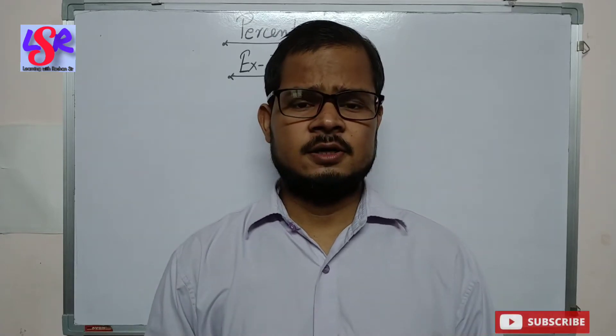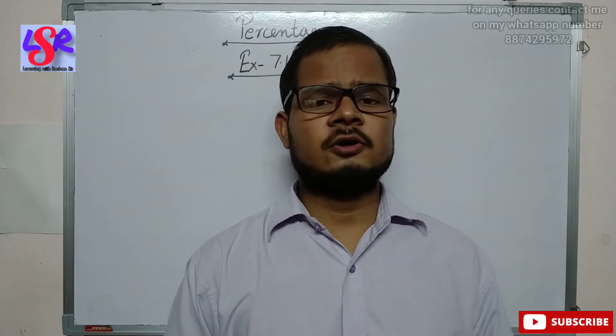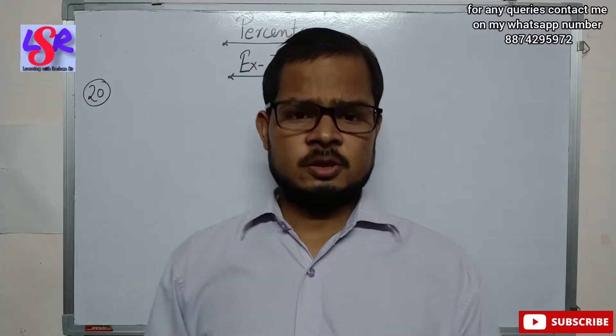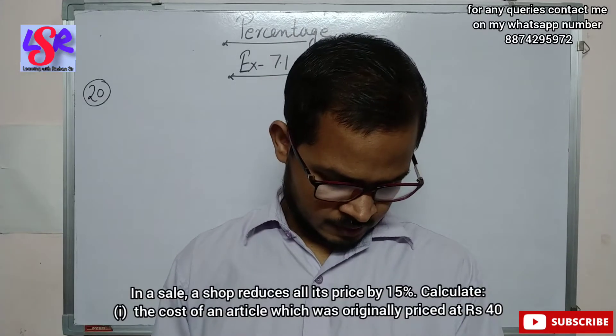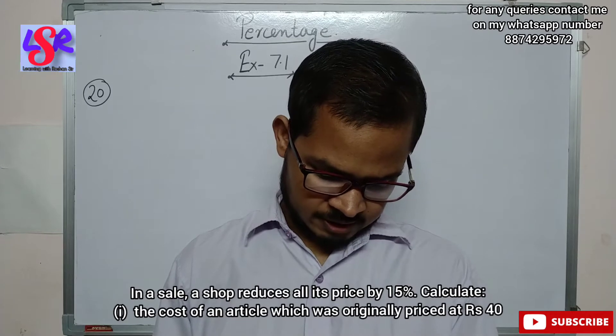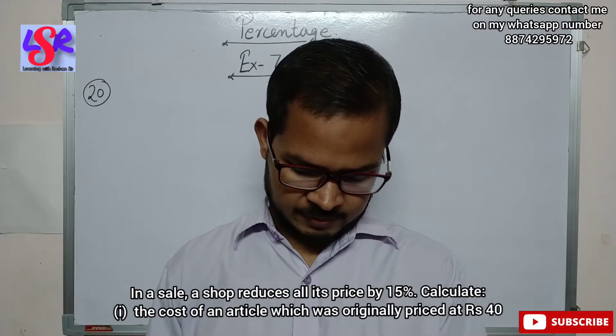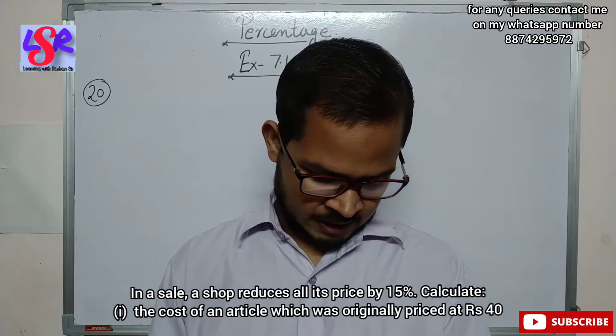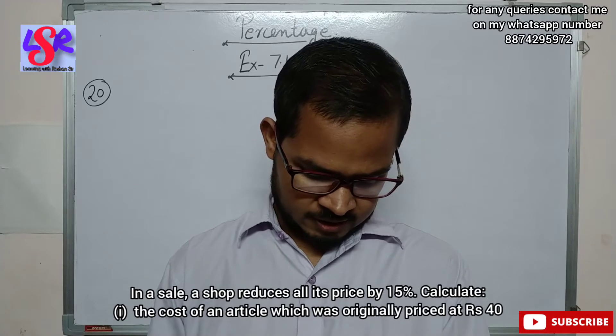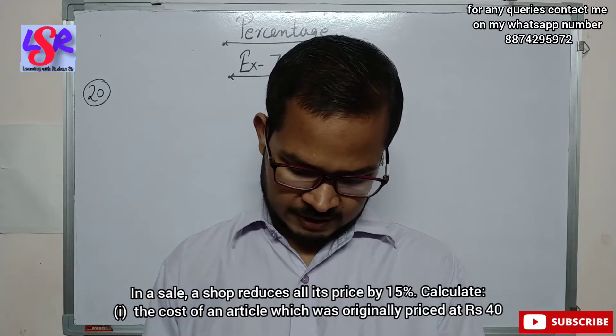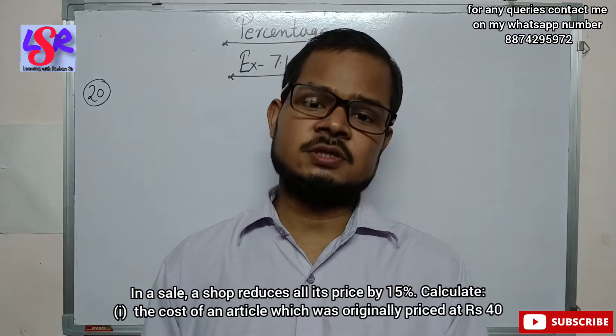Hello everyone. Here we are going to continue with exercise 7.1 of the chapter Percentage. We have already done till question number 19 in our previous video. Now we are going to continue with question number 20. In question number 20, we have been given: in a sale, a shop reduces all its prices by 15%. Calculate the cost of an article which was originally priced at rupees 40.